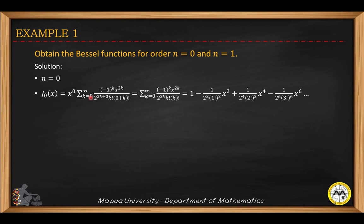We expand the series by substituting the index k from zero through three. Each substitution gives the successive terms of J sub zero. As you can see, J sub zero is expressed in terms of even powers of x.